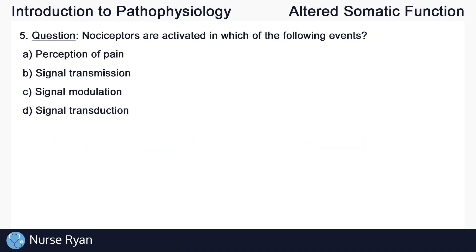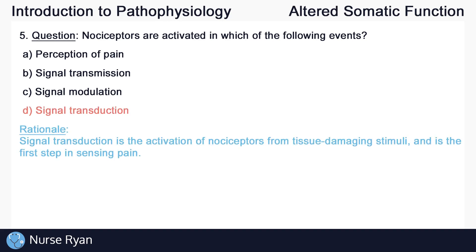Question number five: nociceptors are activated in which of the following events? This one is D, signal transduction. Signal transduction is the activation of nociceptors from tissue-damaging stimuli, and is the first step in sensing pain. It's always a good idea to review the pain pathway before your test.